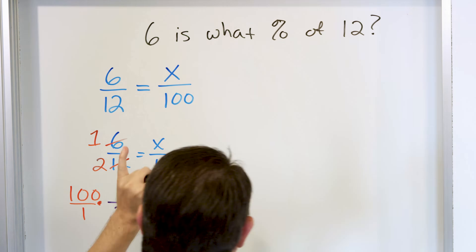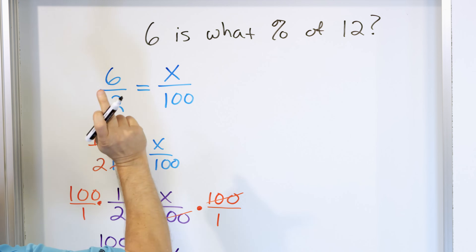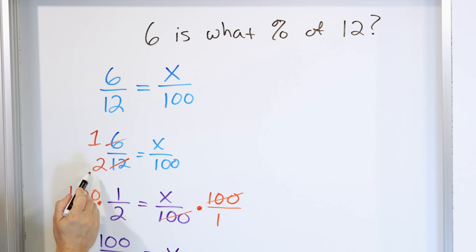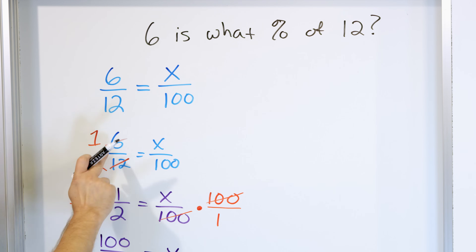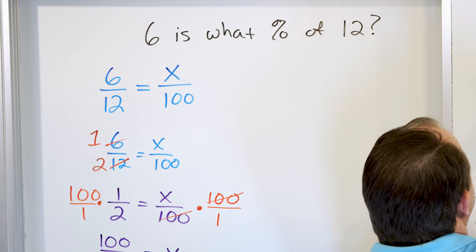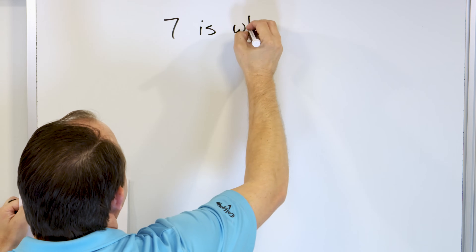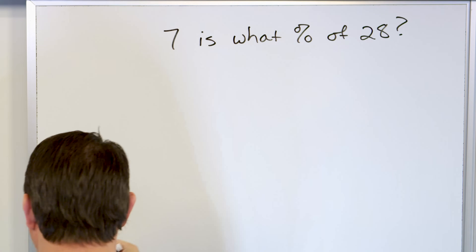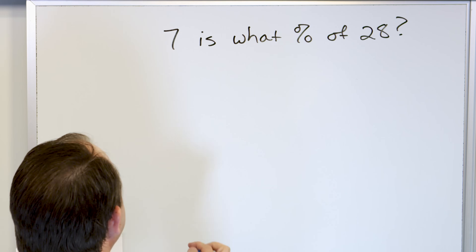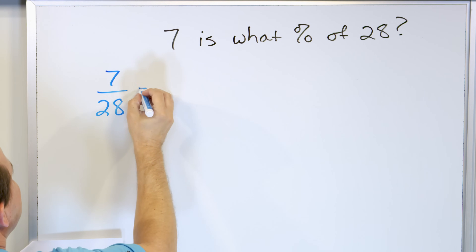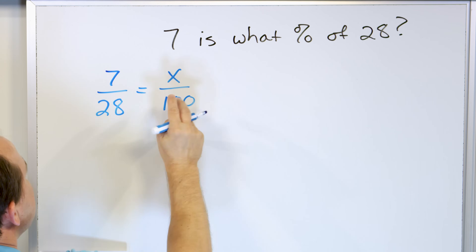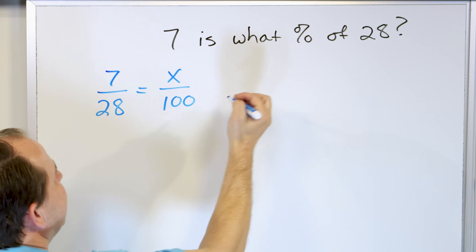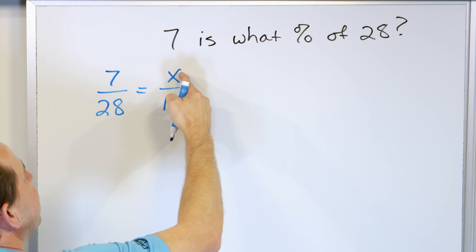All right, next problem. Seven is what percent of 28? All right, seven is what percent of 28? What we're saying is the ratio seven as it compares to 28 is equal to some unknown number out of 100, because seven is what percent of 28 means seven as it compares to 28 as a ratio is equal to some unknown number out of 100. And whatever this unknown number is will be the percentage.